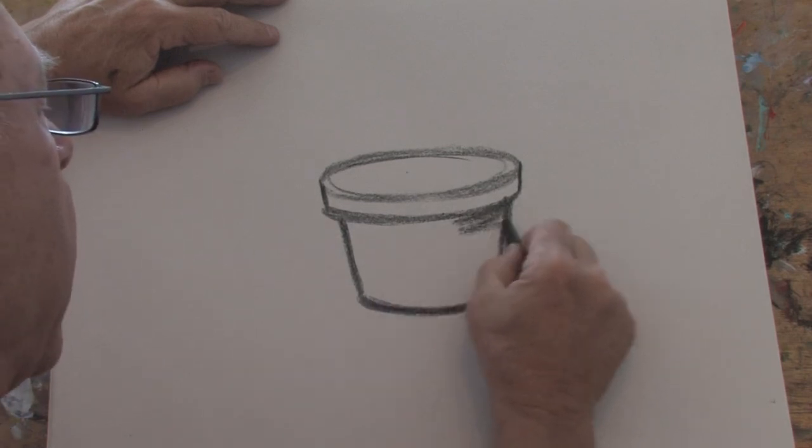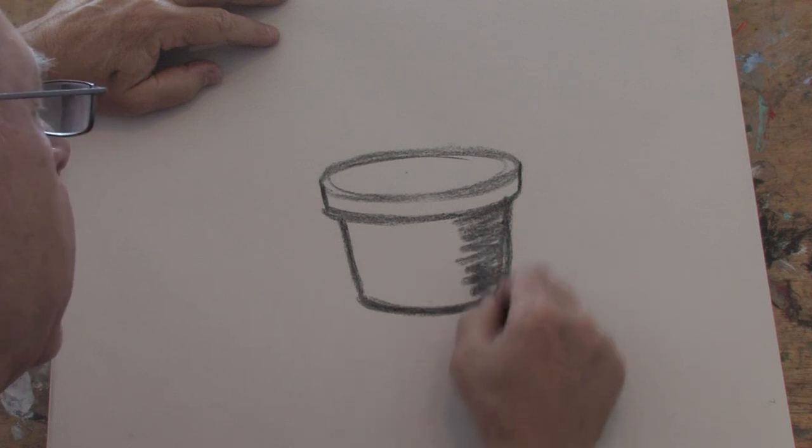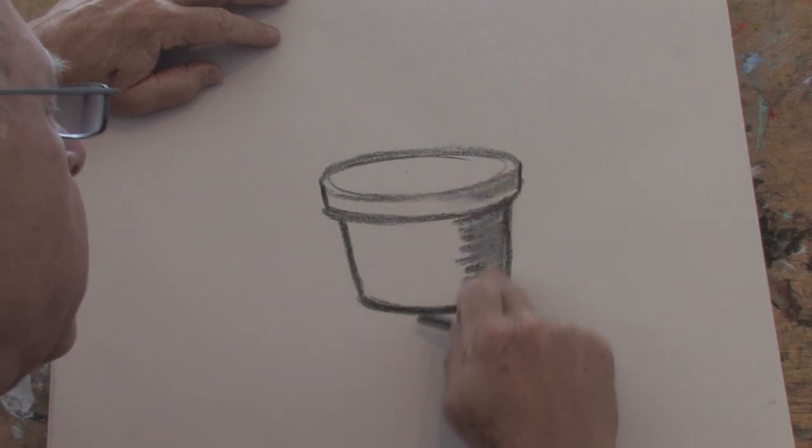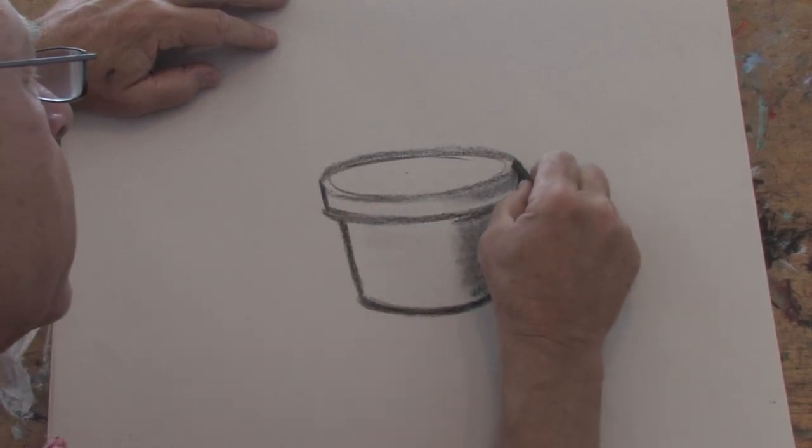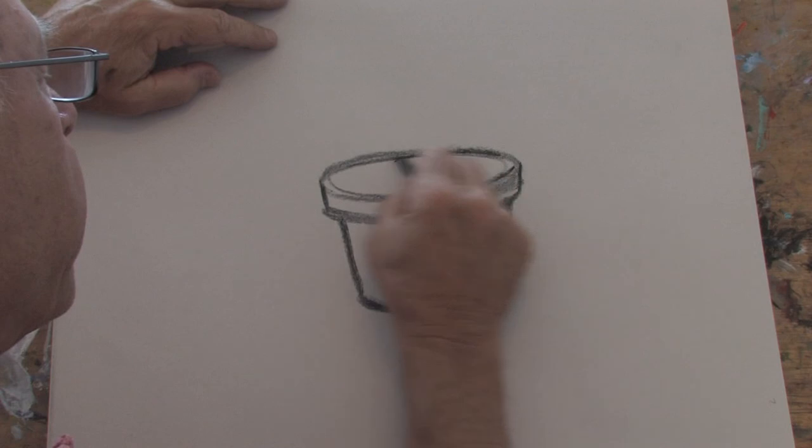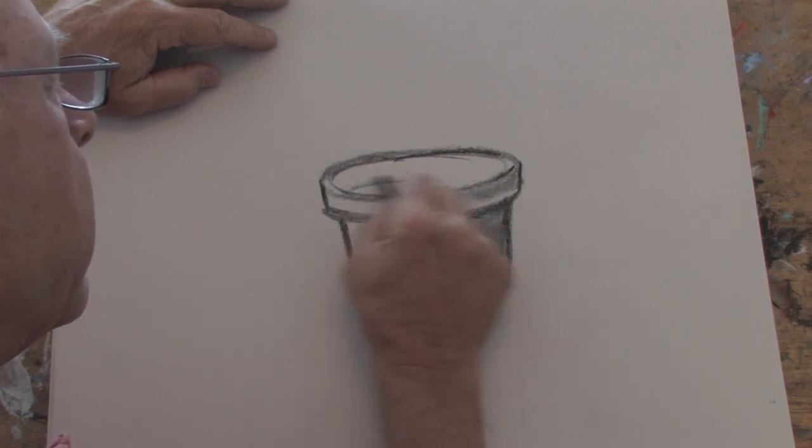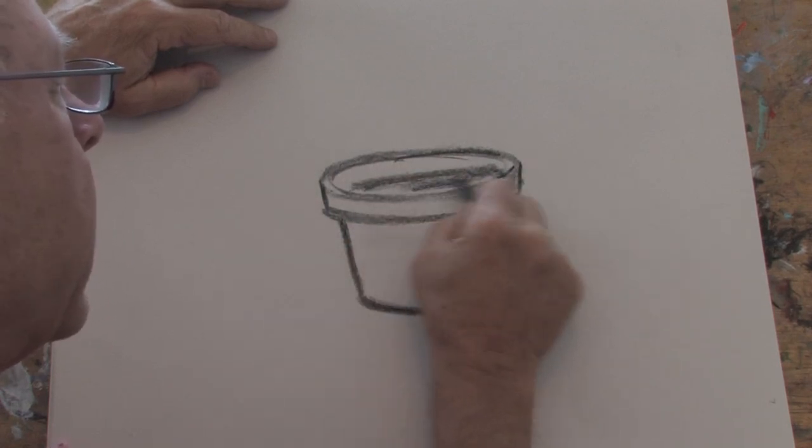So here we have the pot. I'm just putting a little shading on that to give it a little dimension. Here's the rim of the pot, and in the middle would be the soil. The soil is going to be coming across like that.